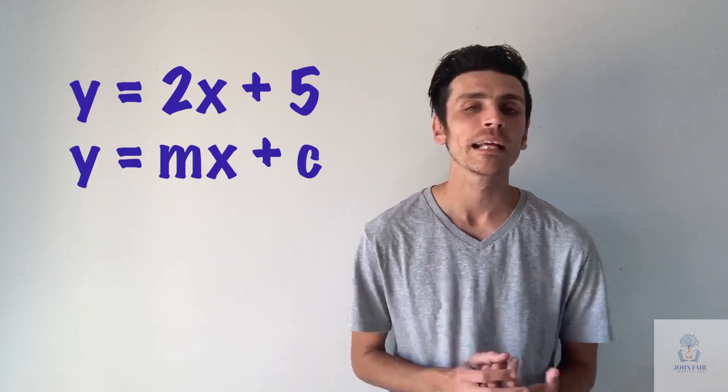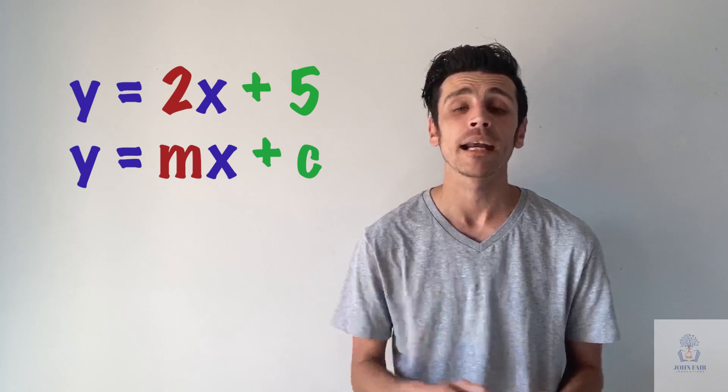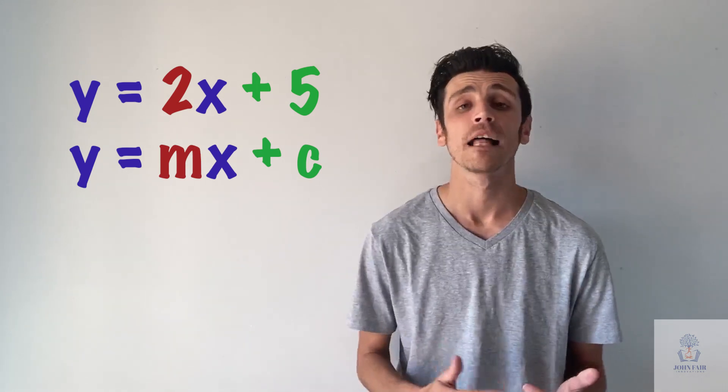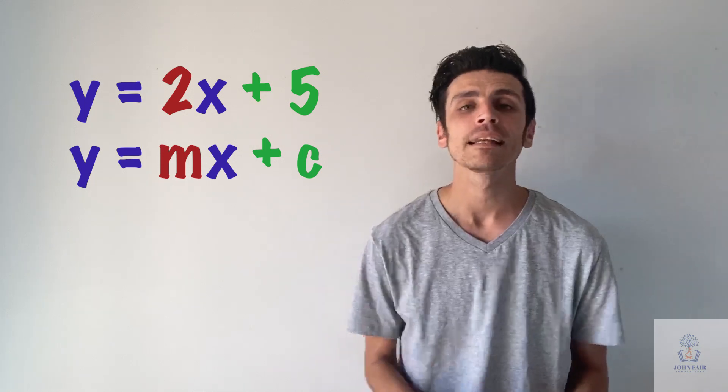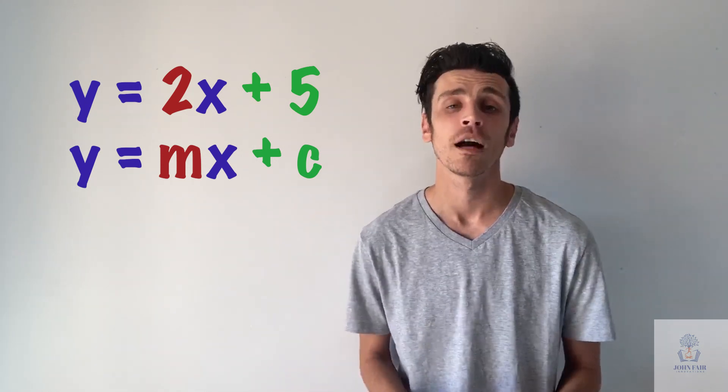So say, for example, if we look at y equals 2x plus 5. Well, we can tell that our gradient is 2 and it's positive. So that means it's going upwards in values of 2. And we can see that it's plus 5, which means that it's crossing our vertical line at 5.